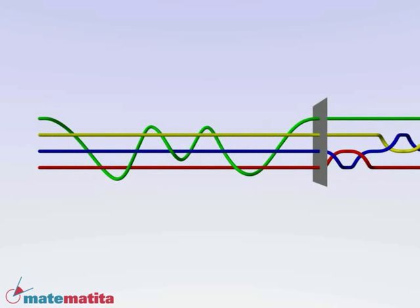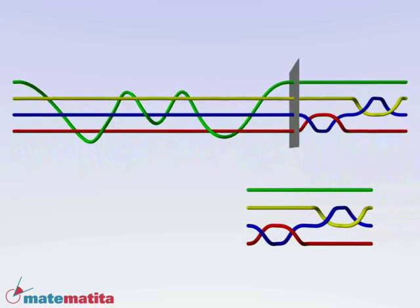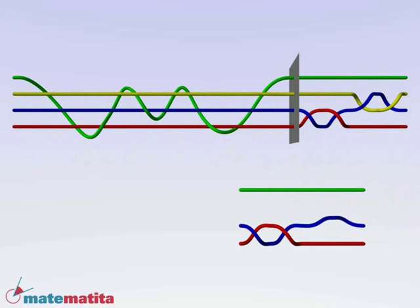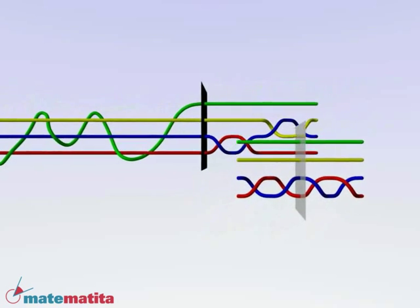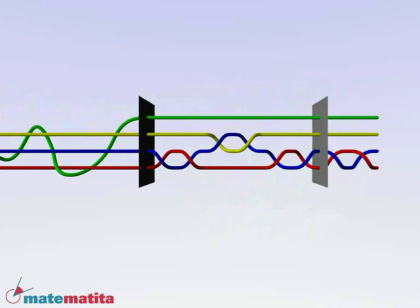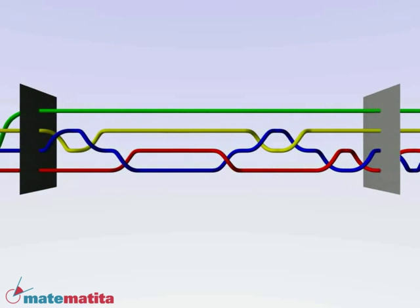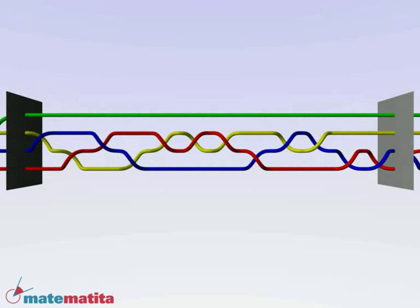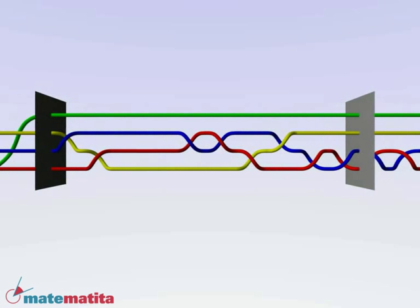Do the same procedure on the right side. Copy the braid, replace the yellow strand with the trivial one. Compose this braid with its inverse getting a trivial braid. Compose this trivial braid with the original one and tidy up the second block. We put it in a form such that the yellow strand links only with the blue one and the red one.